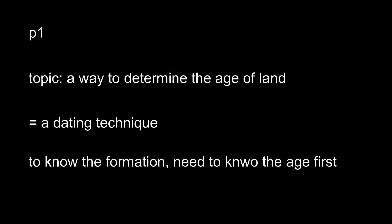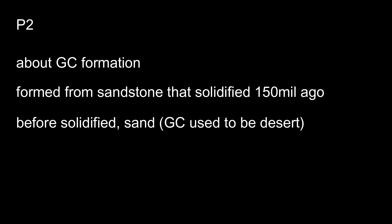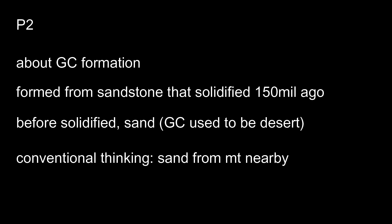Moving on to the second paragraph, let's take a listen. We geologists thought we had a pretty good idea of how the Grand Canyon in the southwestern United States was formed. We knew that it was formed from sandstone that solidified somewhere between 150 and 300 million years ago. Before it solidified, it was just regular sand — essentially part of a vast desert. Until just recently, most of us thought the sand had come from an ancient mountain range fairly close by that flattened out over time. This is a good place to divide the ideas, since now he is talking about a new theory. Paragraph 2 is about a conventional theory that explains where the sand that constitutes the Grand Canyon came from. Conventional means commonsensical — not that original. The commonsensical idea is that the sand must have come from somewhere nearby.